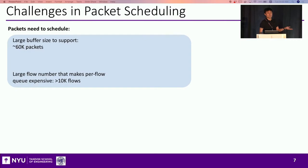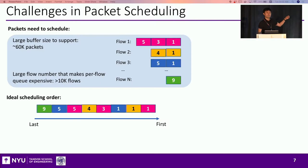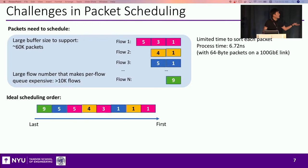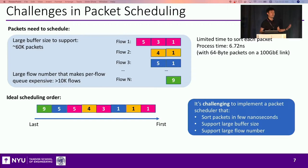Let's take a look at the challenges in packet scheduling. Let's say we need to support a rather large buffer size, around 60K packets, and we have a rather large flow count on the switch. We want to sort all these packets based on the rank assigned by the scheduling algorithm. But at a line rate of 100 gigabits on Ethernet, scheduling packets of 64 bytes, we have less than 7 nanoseconds to process each packet. It's a real challenge to sort all these packets or maintain a large flow queue for each flow.